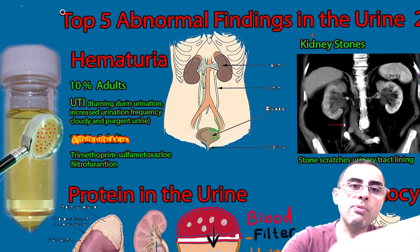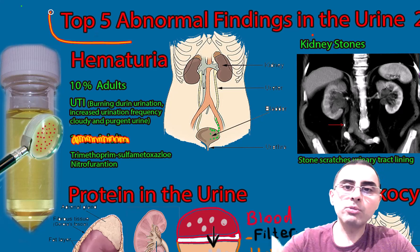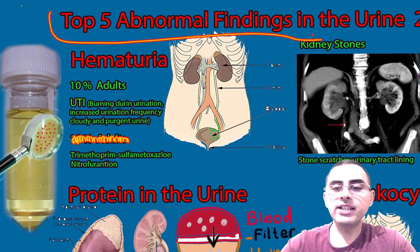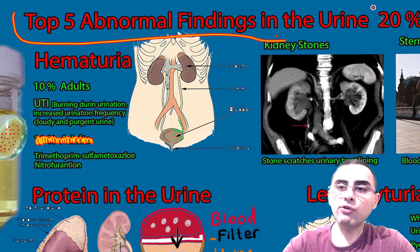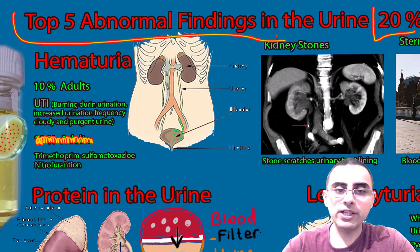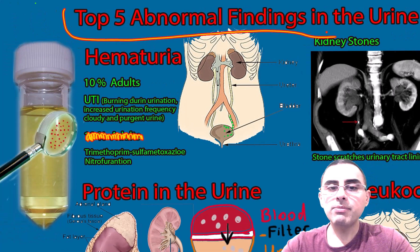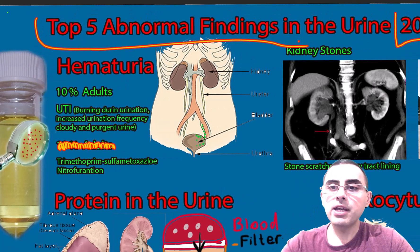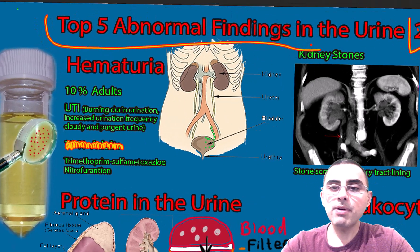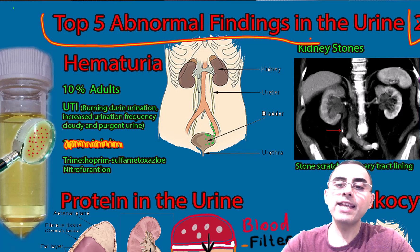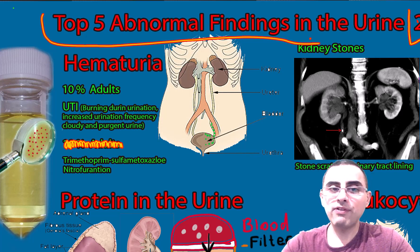We will talk about the top five abnormal findings in the urine. This affects around 20 percent of the adult population, meaning if you examine the urine of adults, 20 percent will have at least one abnormal finding.